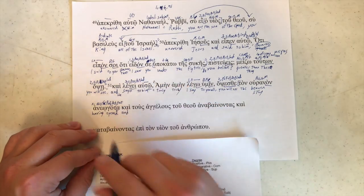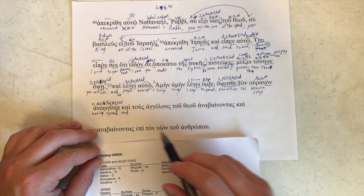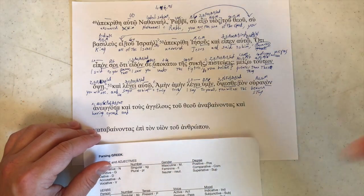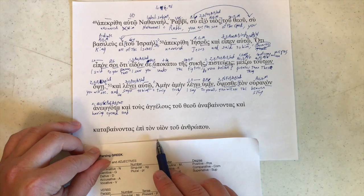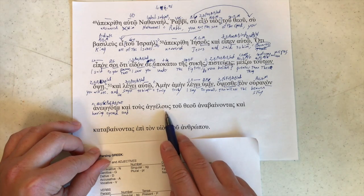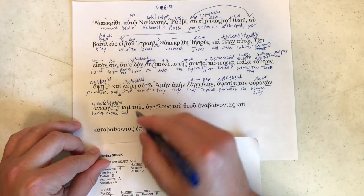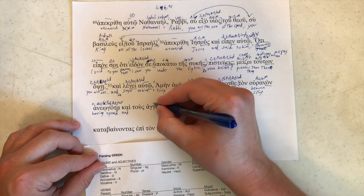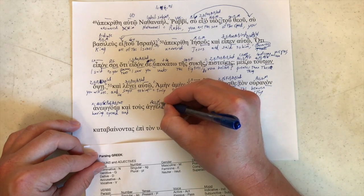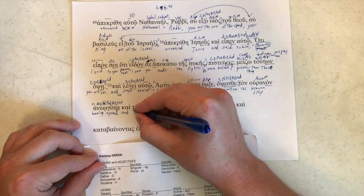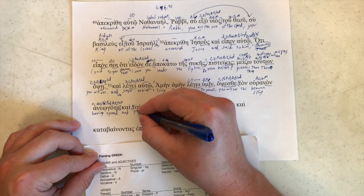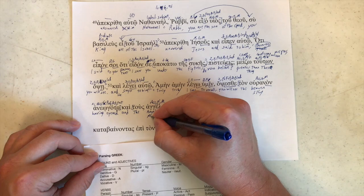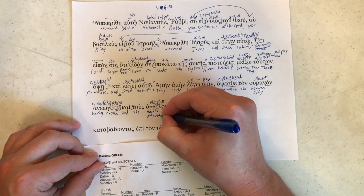Kai. And so this could be connecting another participle or it could be introducing a new direct object. Or technically it could be introducing a completely new clause. But as we take a look ahead, there's no obvious verb. So it looks like it's connecting a new direct object. Tous angelous. Omicron, upsilon, sigma. There is our accusative plural, masculine. And that means that this bracket should end there. The angels or messengers.